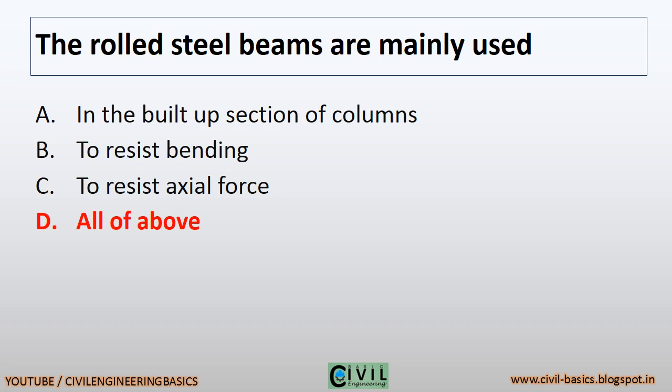The rolled steel beams are mainly used in the built-up section of columns to resist bending, to resist axial force — all of the above.